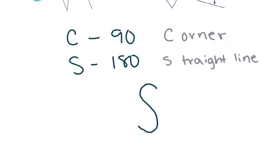A final way to remember this: if you take an S and look at the two parts of the S — the top portion and the bottom portion — it kind of makes two Cs, a regular C and an upside down C. So if you think about two complementary angles making a supplementary angle, because 90 plus 90 is 180, that's the final way to remember that complementary is 90 and supplementary is 180.